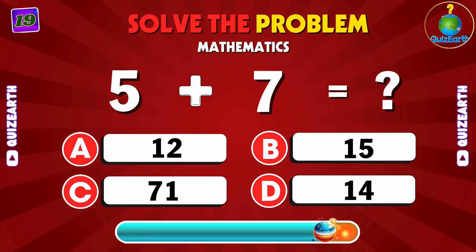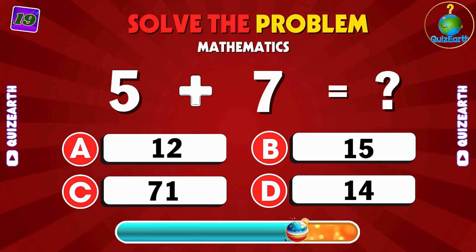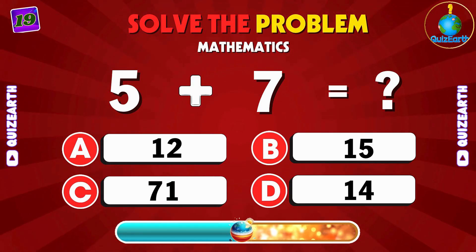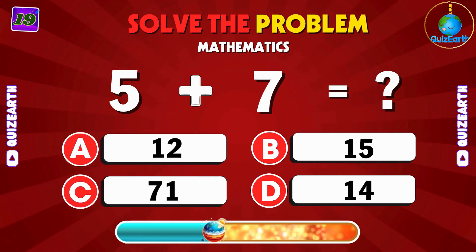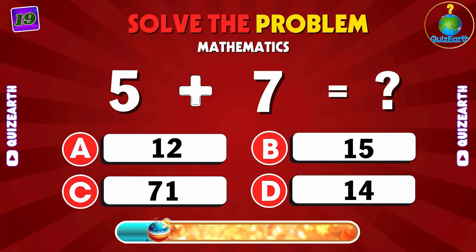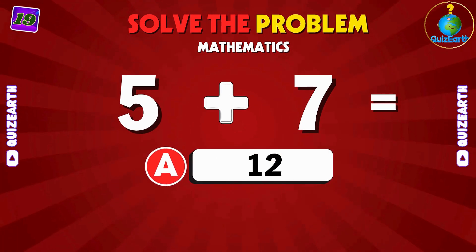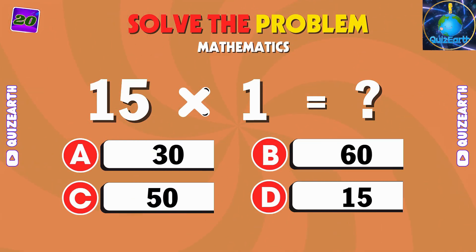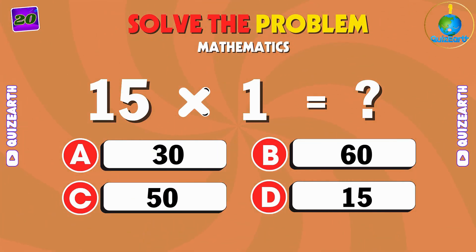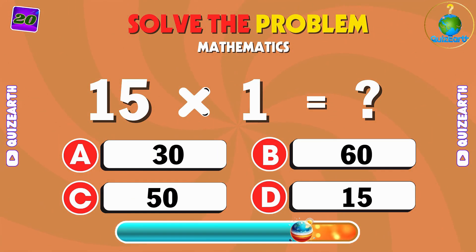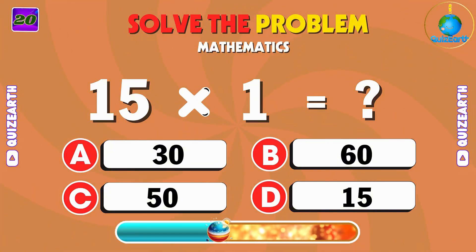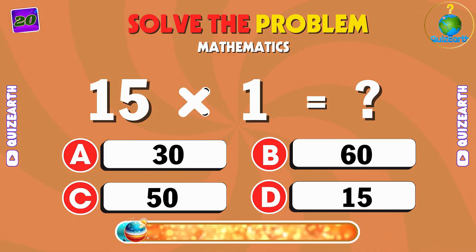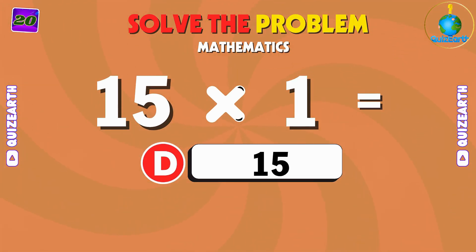Add 5 and 7 — what do you get? A: 12. Multiply 10 by 1 — easy peasy. A: 12. D: 15.